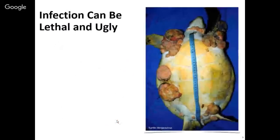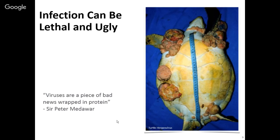Here's an example of a viral infection: this is a green turtle herpes virus. It causes these terrible lesions on green sea turtles. It can be lethal and ugly, which led one Nobel Prize winner to quip that viruses are nothing more than a piece of bad news wrapped in protein. So that's one way to define a virus.